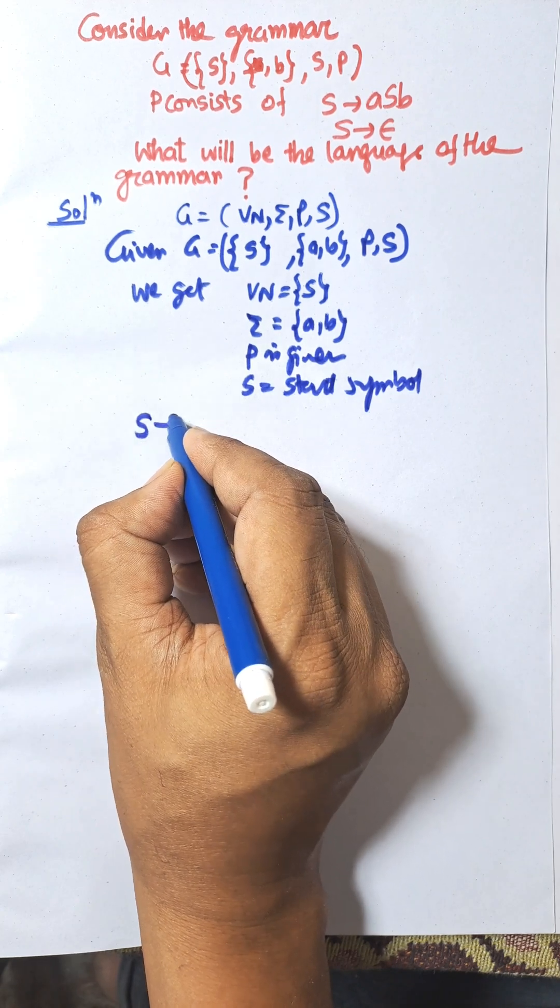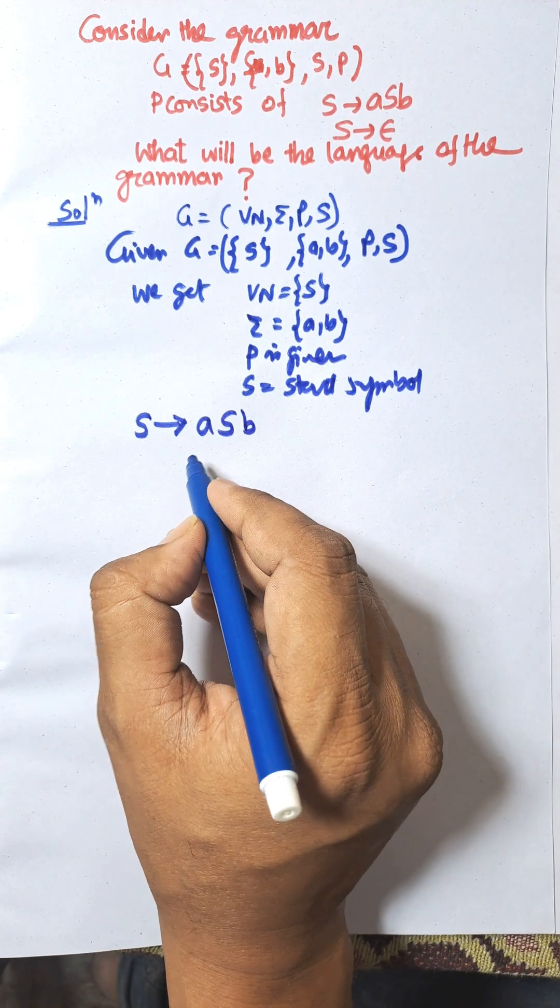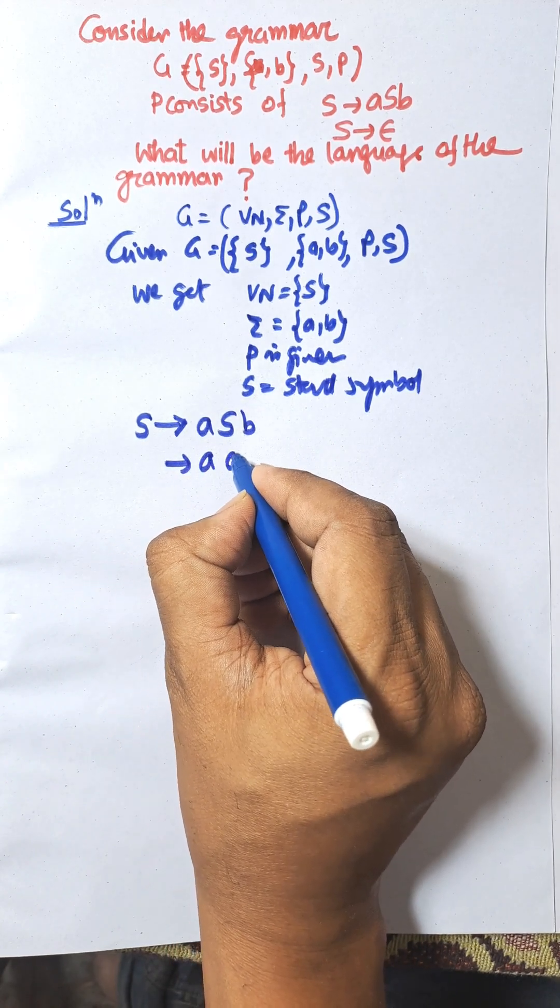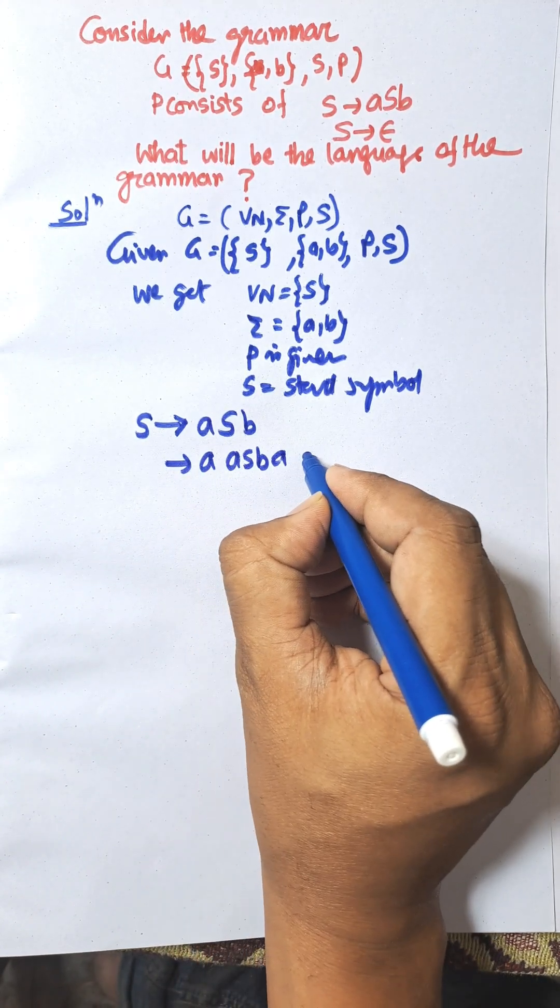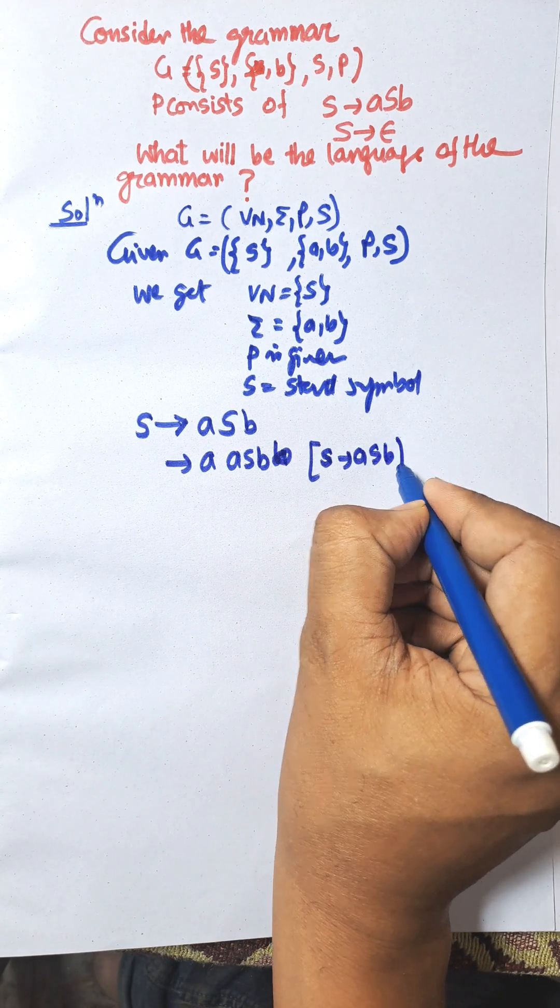We know the language is generated from the start symbol, so S equals aSb. Now we can replace S again: a(aSb)b. This is just S to aSb, replacing S as aSb and putting it again and again.